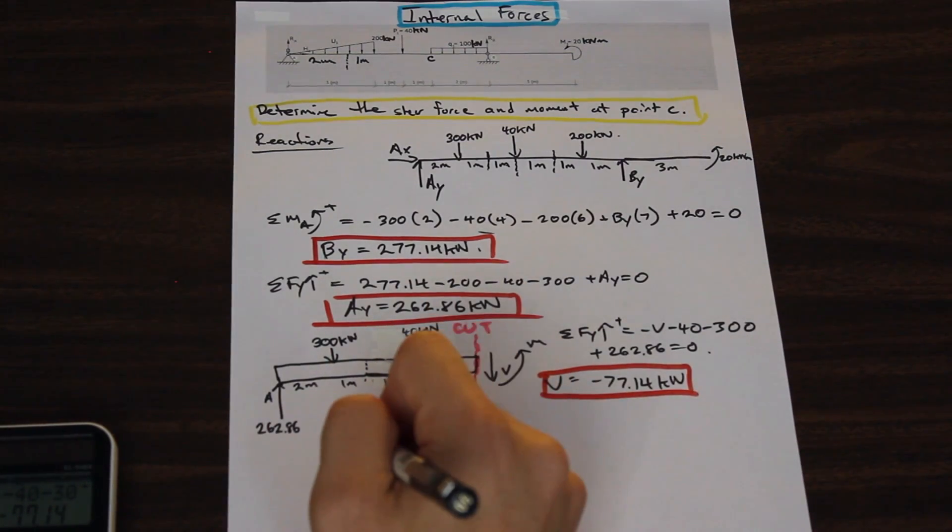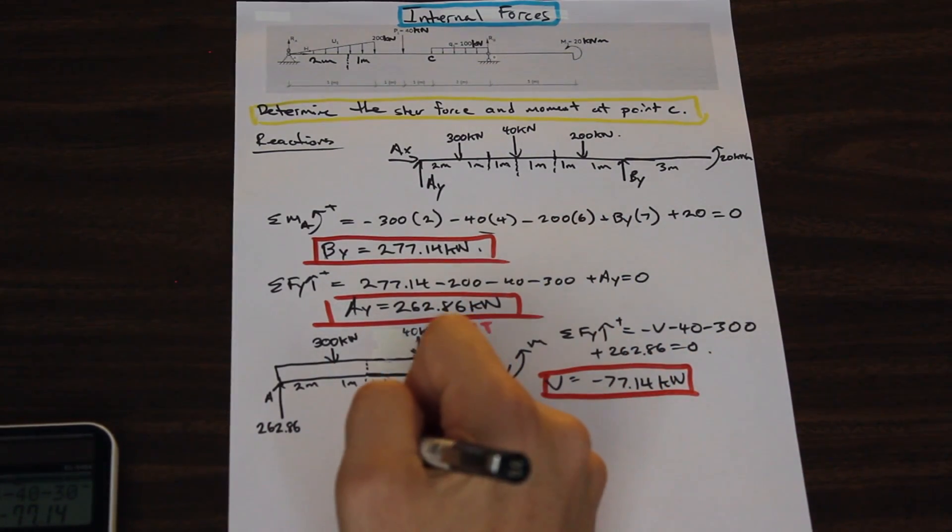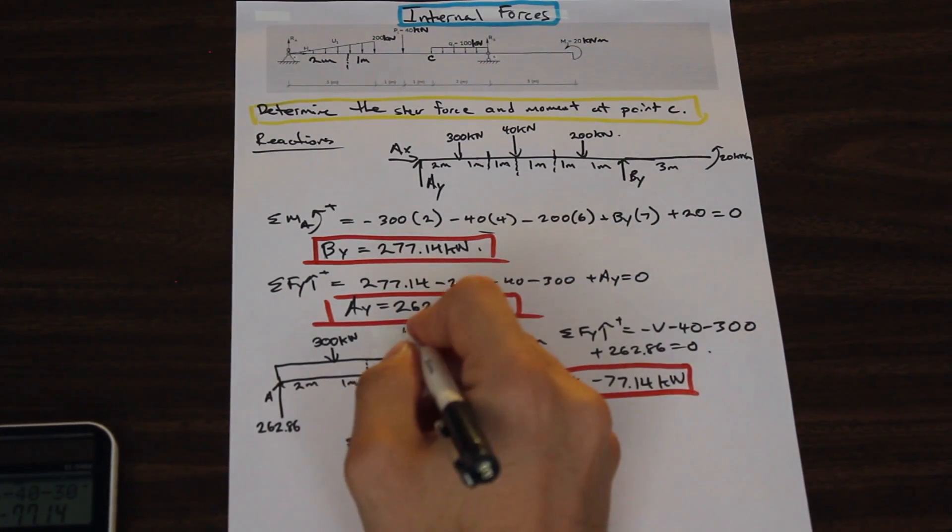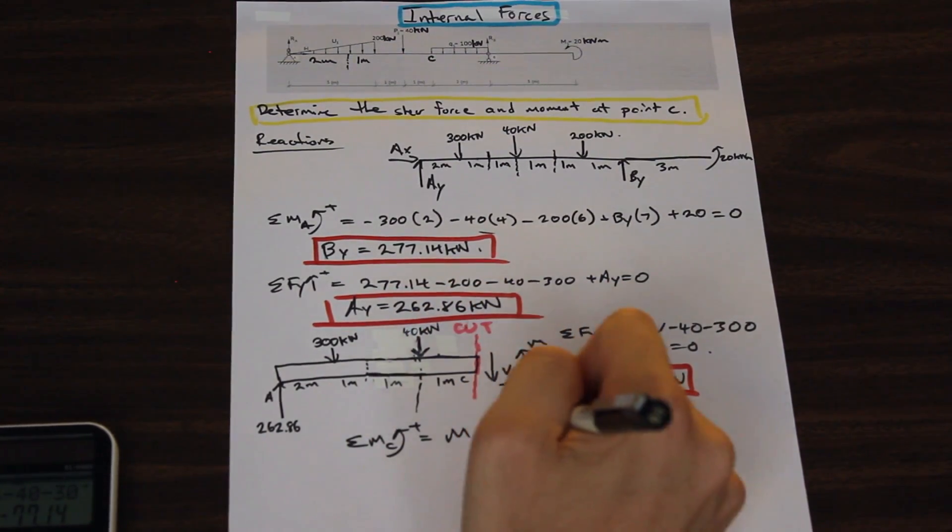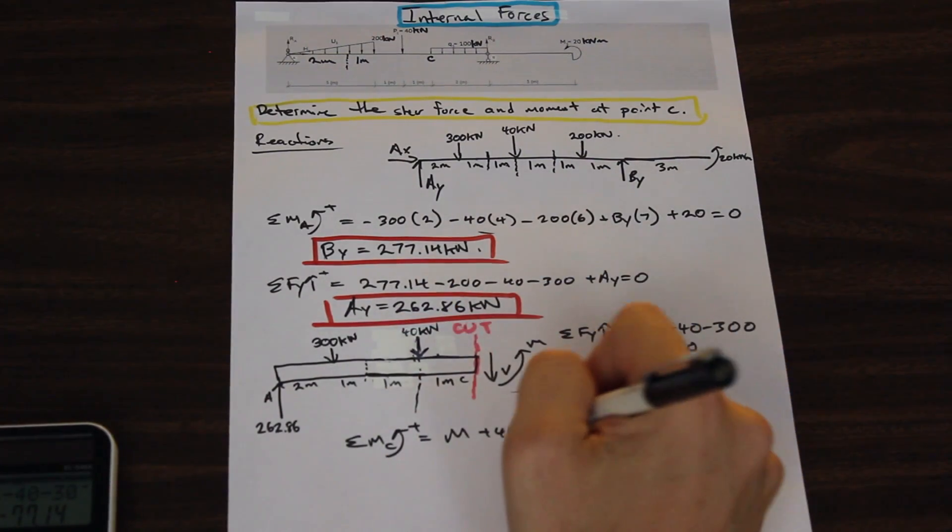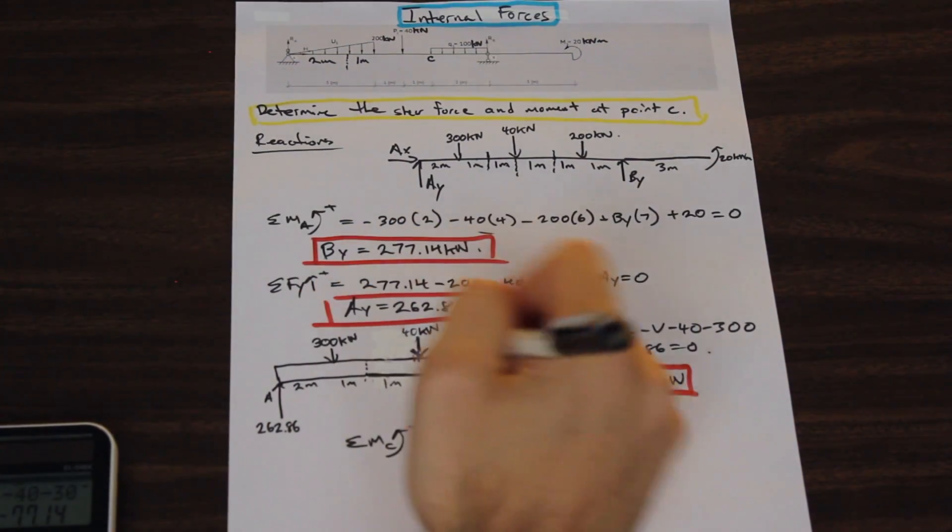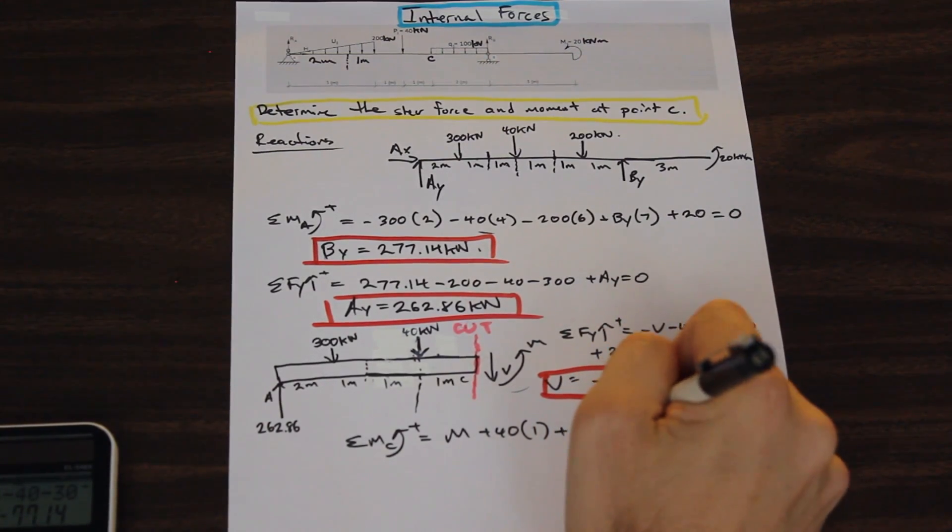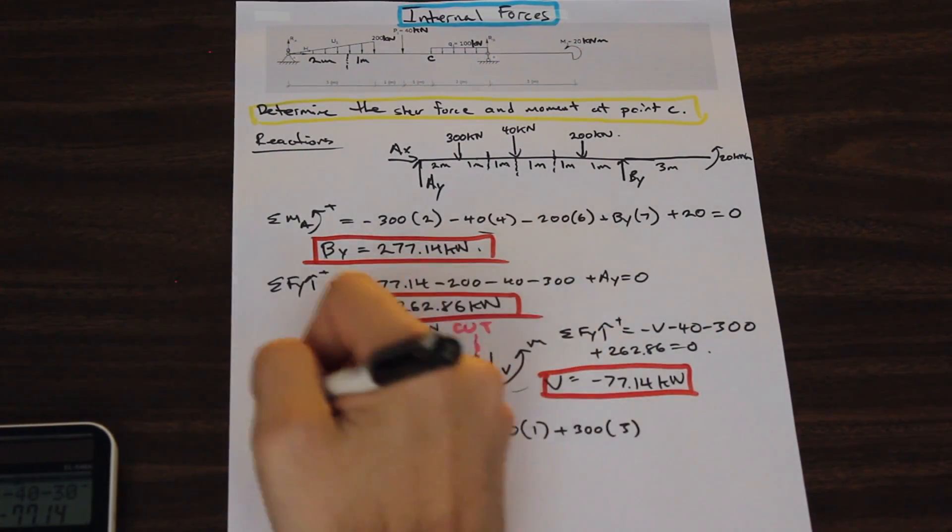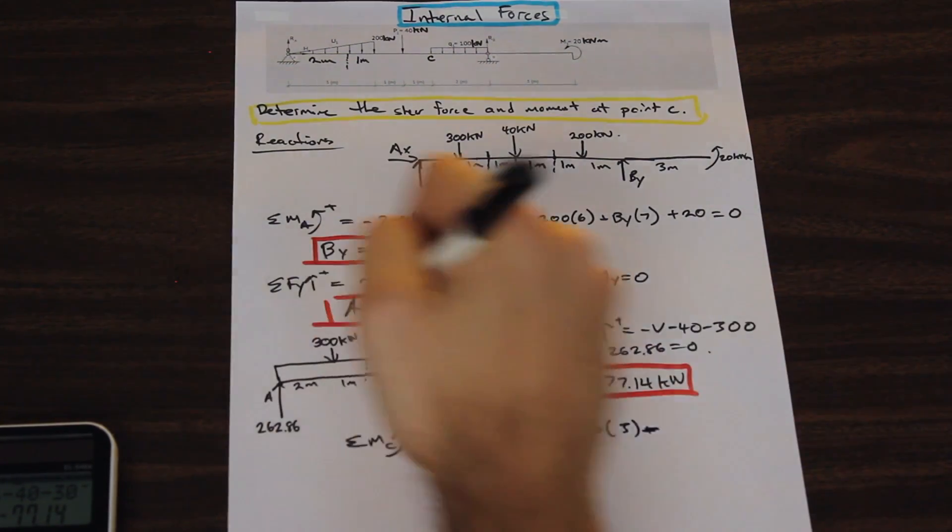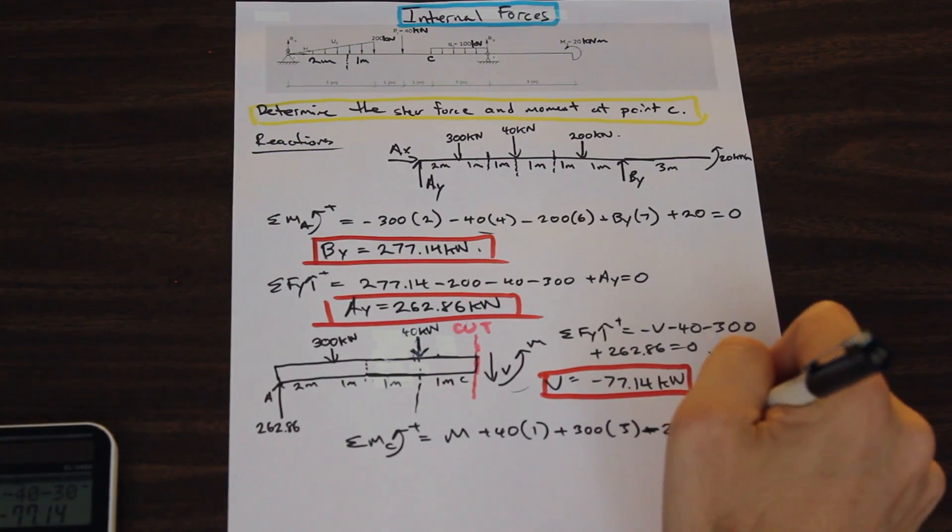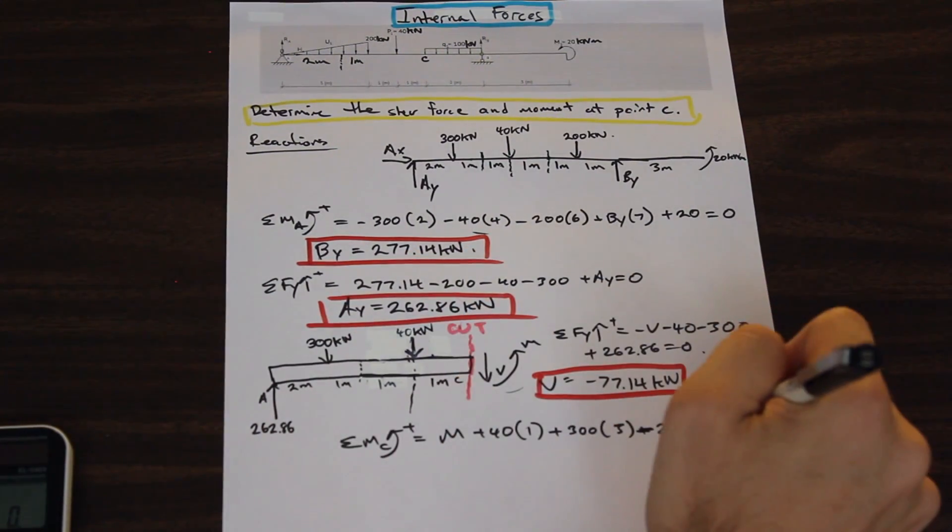Now, let's find the moment at point C. So the moment at point C is equal to the free moment M, we have a positive 40 kilonewton force that's going to create a positive moment. We have a 300 kilonewton force that is acting positive direction, 3 meters from that point. And we have the 262.86, that's going to be negative because it's going in the opposite direction, 262.86 times 5, this distance.